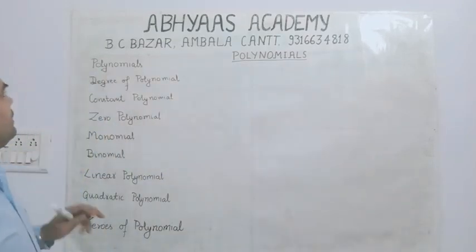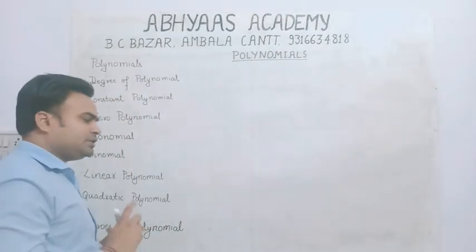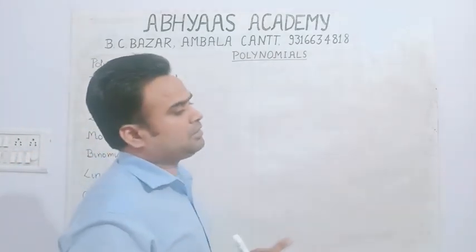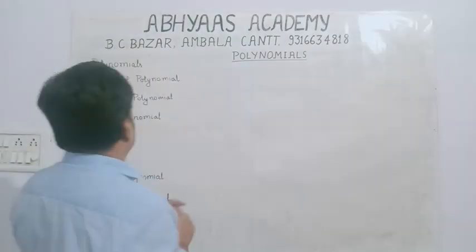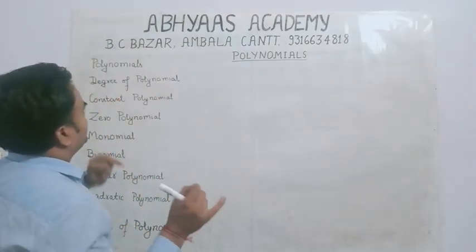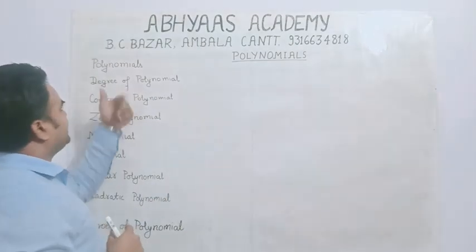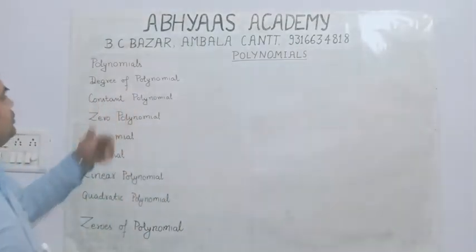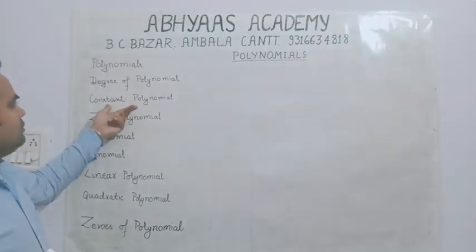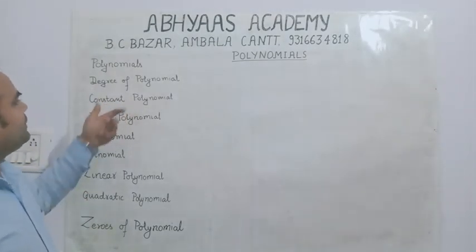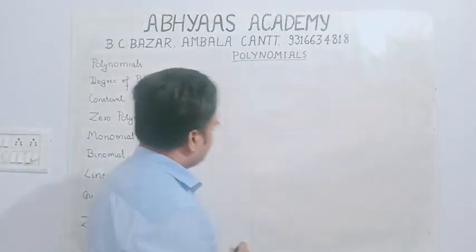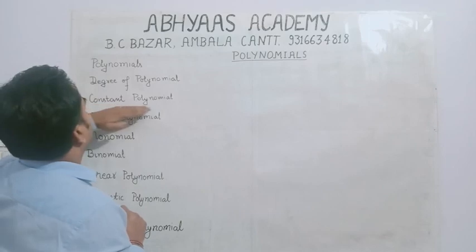To summarize: a polynomial is an algebraic expression in which many terms are there and the variable has non-negative integral exponents. The degree of polynomial is the highest power of the polynomial. If the highest power is 0, you can call it a constant polynomial.